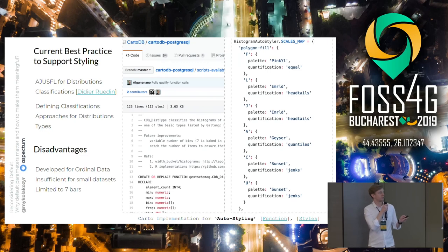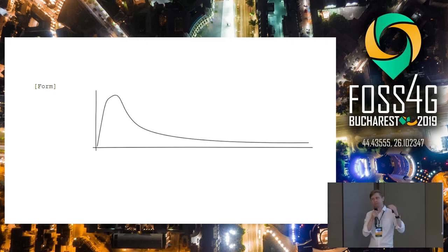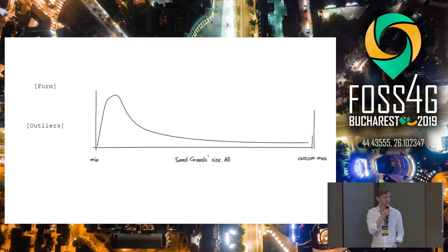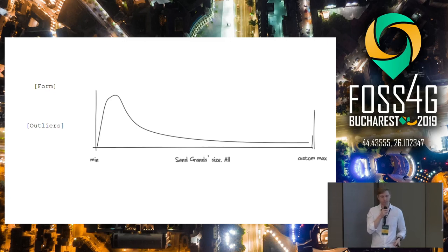My suggestion is to move further and initiate a project which would take into account the form of the histogram, the outliers, and the size of the datasets — because that's extremely important. You cannot work with just ordinal data. That's probably what I would like to discuss, and that's the project I would like to initiate. We are already starting to work on it with students, and it would be great if anyone would be interested in joining us to create a solution that would lower the level of entry into the location intelligence industry.